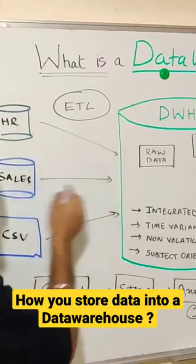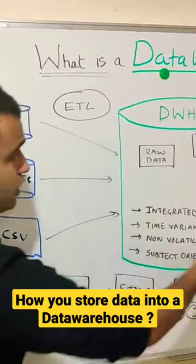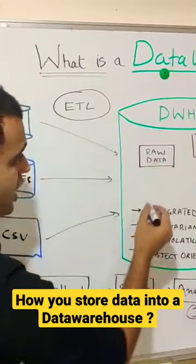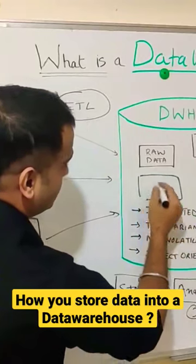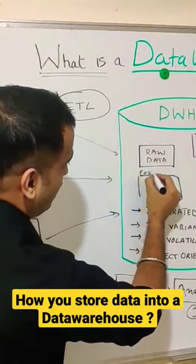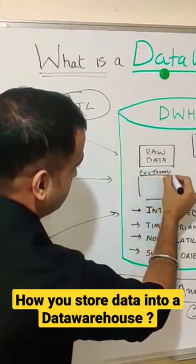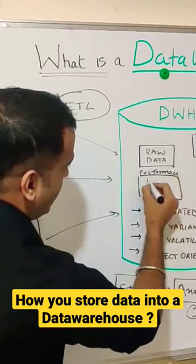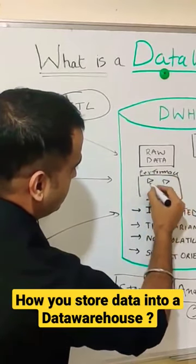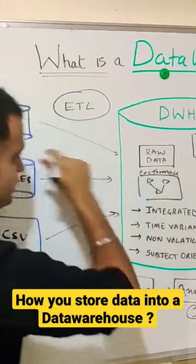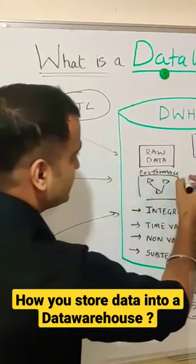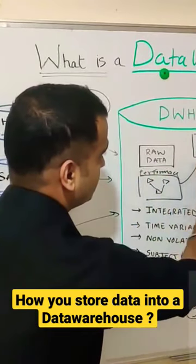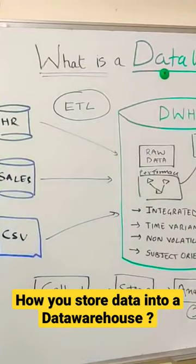So you can bring these two datasets into a data warehouse and create a performance dataset. In this dataset, you can combine all the disparate data coming from HR and sales to create a summary data, which can be further distributed to the higher management.